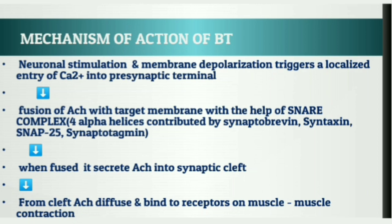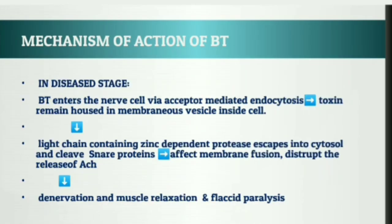When the vesicle gets fused, it secretes acetylcholine into the synaptic cleft. The acetylcholine molecules diffuse across the synaptic junction and bind to specific receptors on the muscle, leading to muscle contraction. That is the normal mechanism. Now let's see what happens due to this toxin: when botulinum neurotoxin enters the nerve cell via receptor-mediated endocytosis, the toxin remains housed in a membranous vesicle inside the cell.